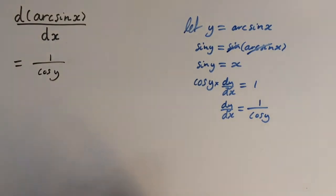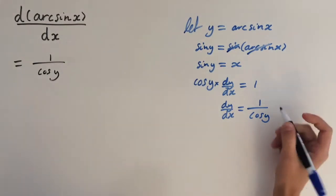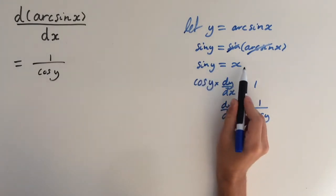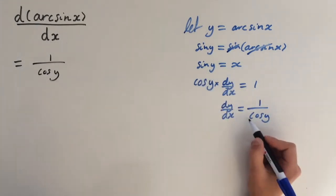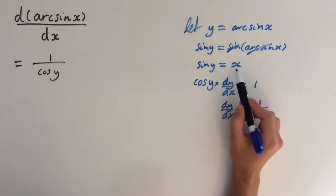But we want to find the derivative of arcsin in terms of x. And we've got y's at the moment. But we've got an expression here that relates x and y. So we want to express cosine of y in terms of sine of y. Because then we can substitute it for x.